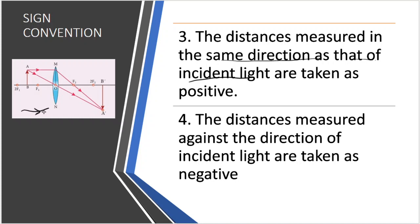For example, in a convex lens, we place the object here — A, B is the object. The object is on the left side of the optical center. We mark the distance u. Since it is in the opposite direction to the incident light, the sign convention for u is minus. At the same time, the image is on the right side. We use v for that distance. Since the image is in the same direction as the incident ray, v gets a plus sign.